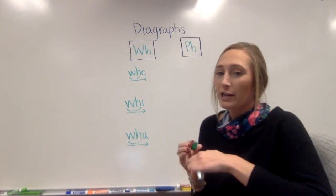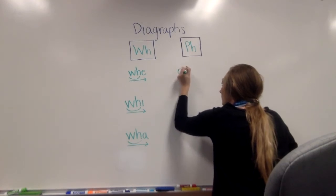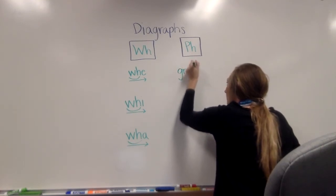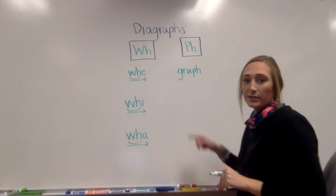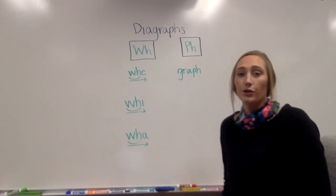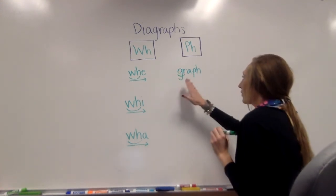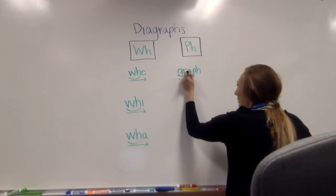So what if I showed you this word? Can you sound this word out? GR. That is an R blend. So we need to mark it. GR, AH. I need to mark my vowel.